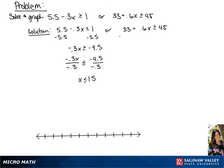Now, for our second inequality, we're going to subtract 33 from each side, giving us 6x is greater than or equal to 12.